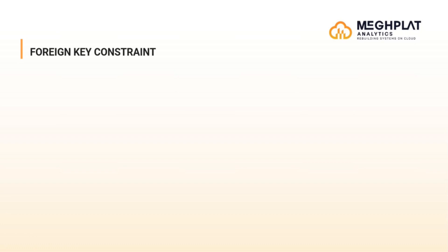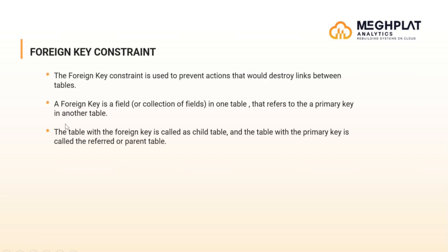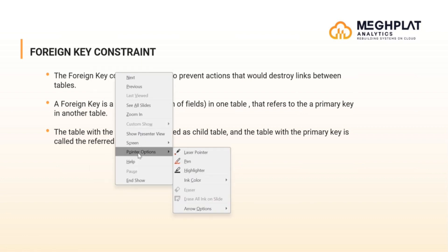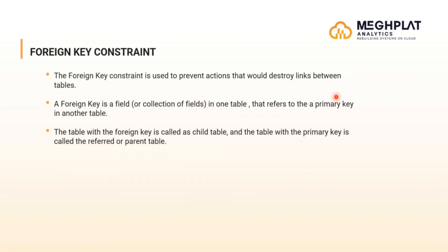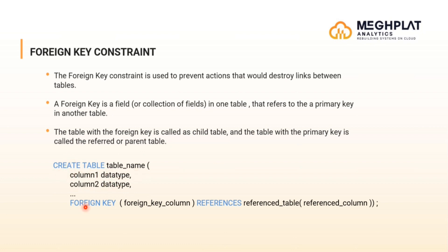Let's see the foreign key constraint. The foreign key constraint is used to prevent actions that would destroy links between tables. A foreign key is a field in one table that refers to a primary key in another table. The table with the foreign key is called the child table, and the table with the primary key is called the referenced table or parent table. The syntax: create table, table name, then the column and its data type, foreign key inside braces with the foreign key column, then the referenced table.